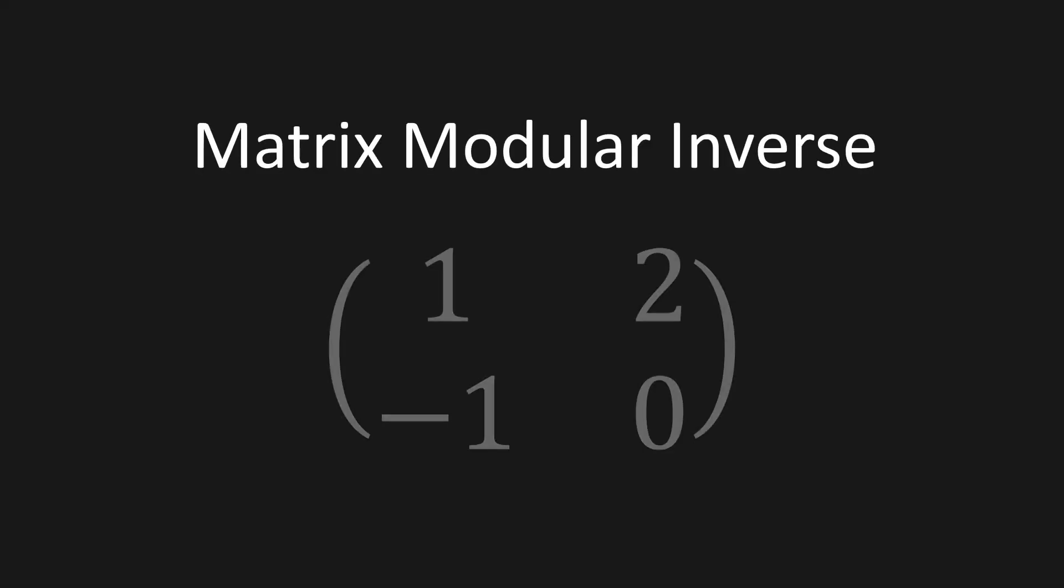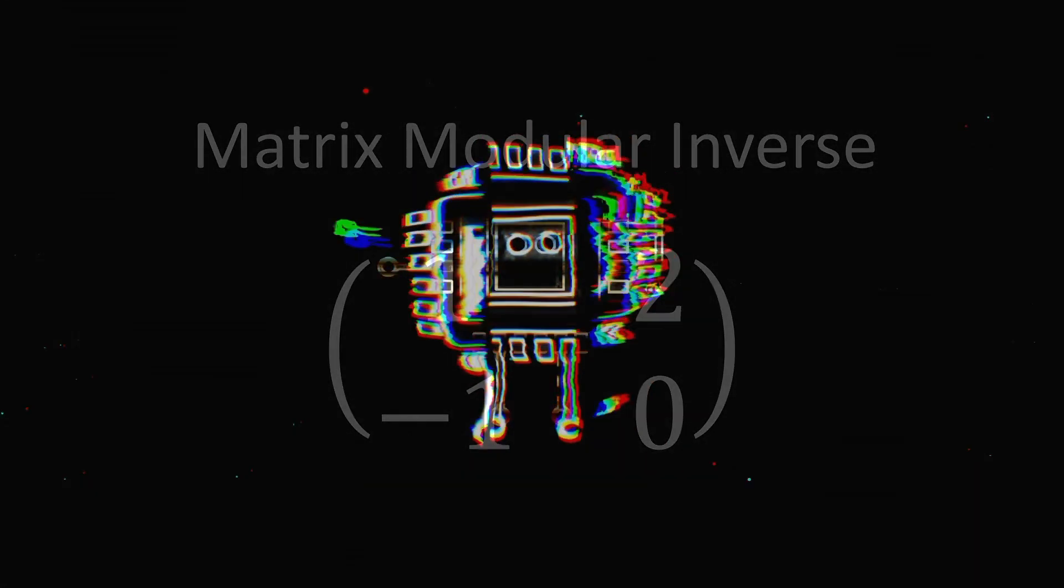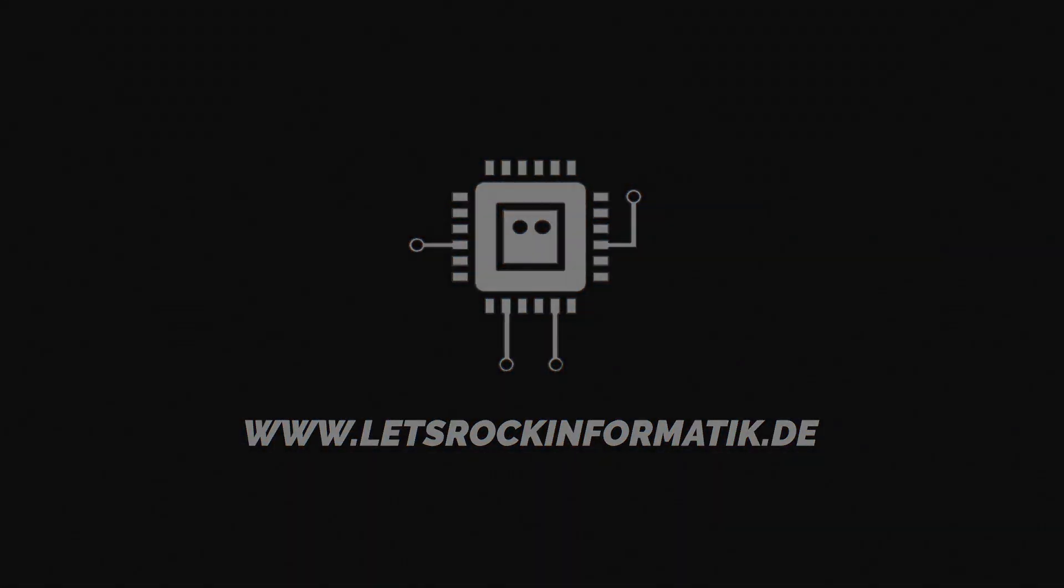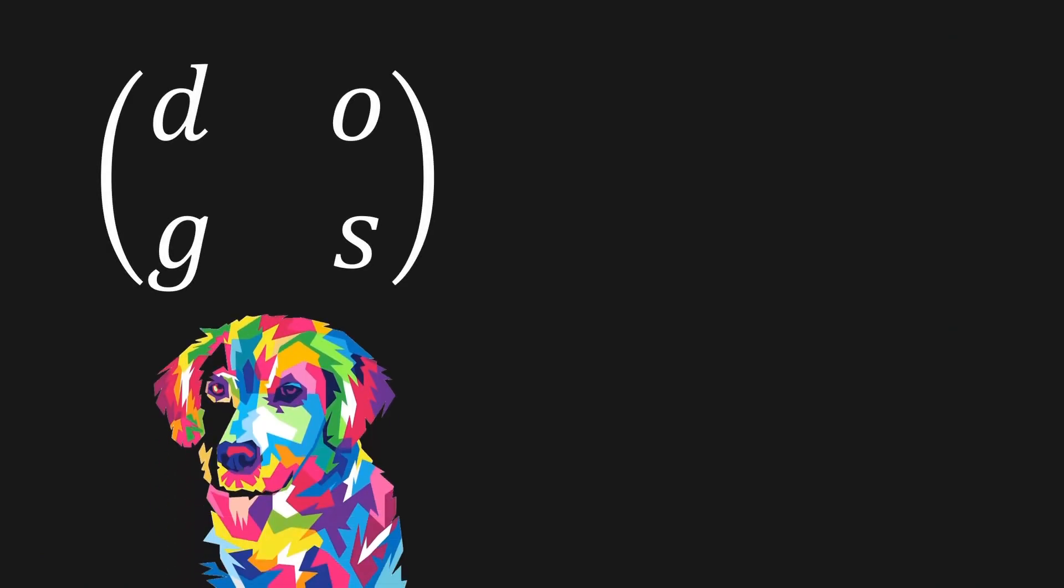In this video I will explain how to calculate the matrix modular inverse of a 2x2 matrix. In order to decrypt messages that have been encrypted using the matrix multiplication-based Hill-Cipher cryptosystem, you need to be able to find the multiplicative inverse of a matrix modulo n.